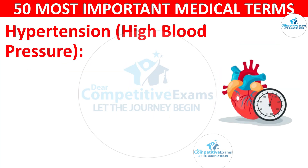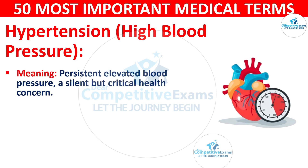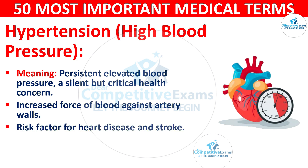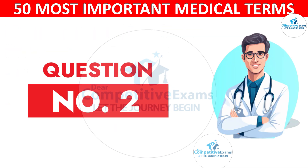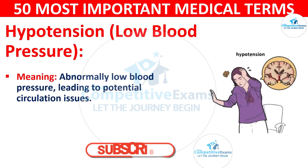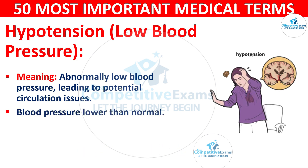Hypertension, high blood pressure: meaning persistent elevated blood pressure, a silent but critical health concern. It is increased force of blood against artery walls, a risk factor for heart disease and stroke. Hypotension, known as low blood pressure: meaning abnormally low blood pressure leading to potential circulation issues. Blood pressure lower than normal may cause dizziness and fainting.